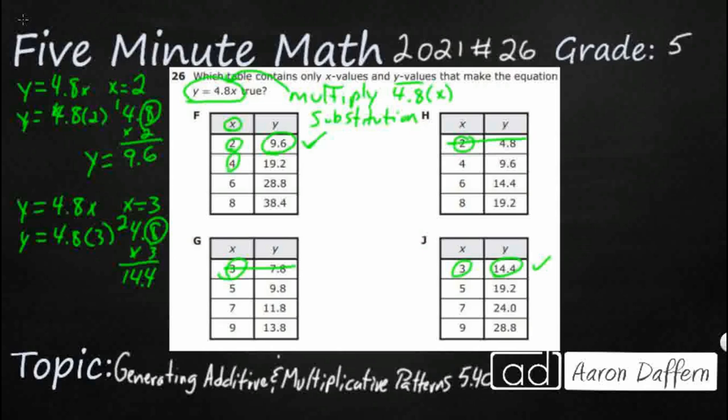Let's say y equals 4.8x. In this case, we'll say x equals 4. So, y equals 4.8 times 4. With parentheses there. So, let's do that. 4.8 times 4.